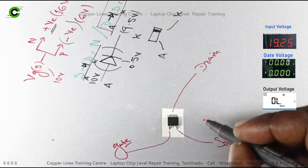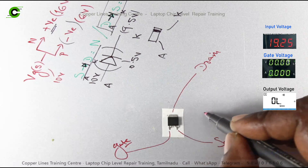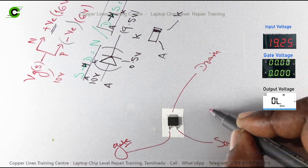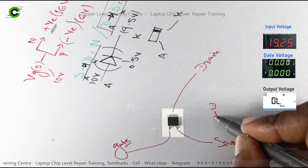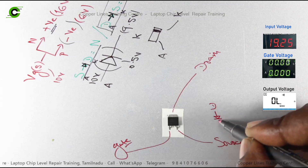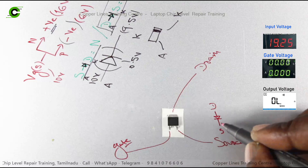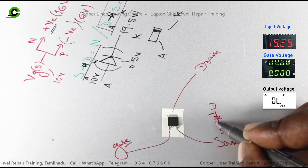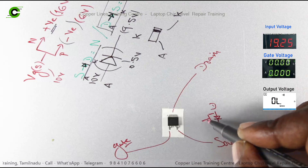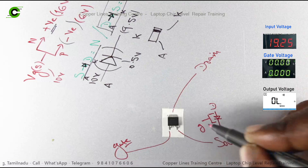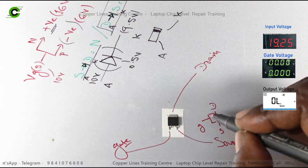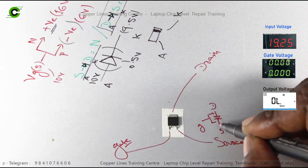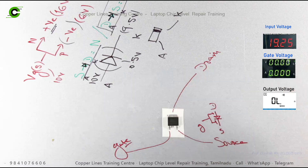We will talk about the diode direction. For the P channel, this is the drain, and this is the source. The gate value is shown here. This is typically the electronic schematic symbol.